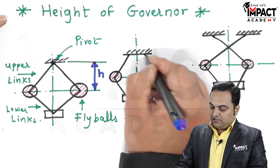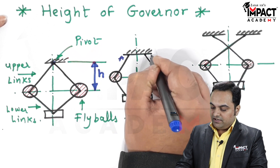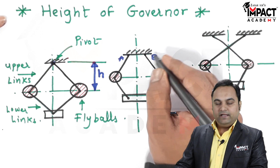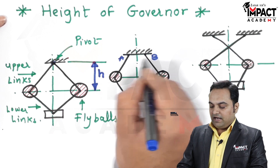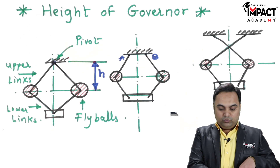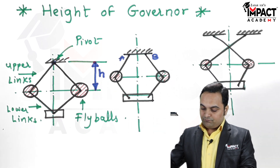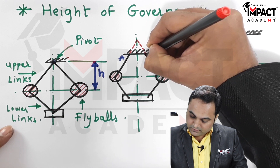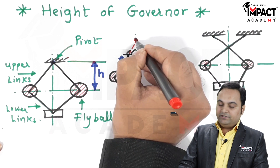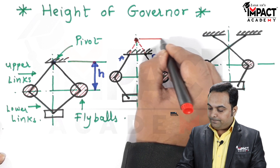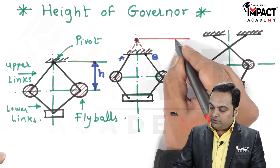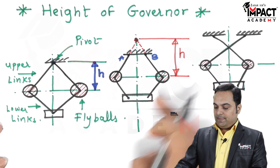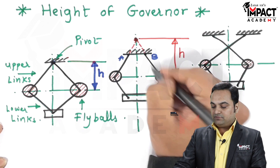In the second diagram, the upper links are connected at two locations — I'll call this A and B. As per the definition, height of governor is the vertical distance between the center of the fly ball and the intersection of arms. But in this diagram the arms are not getting intersected, so what we have to do is just extend these arms along their line so that they get intersected at a particular point. The distance from this intersection point up to the center of the fly balls indicates the height of the governor.